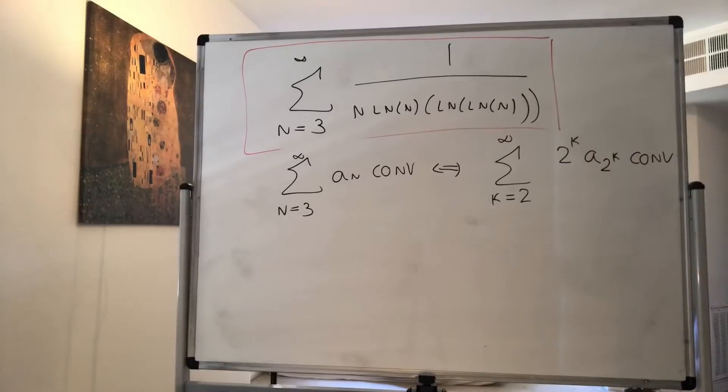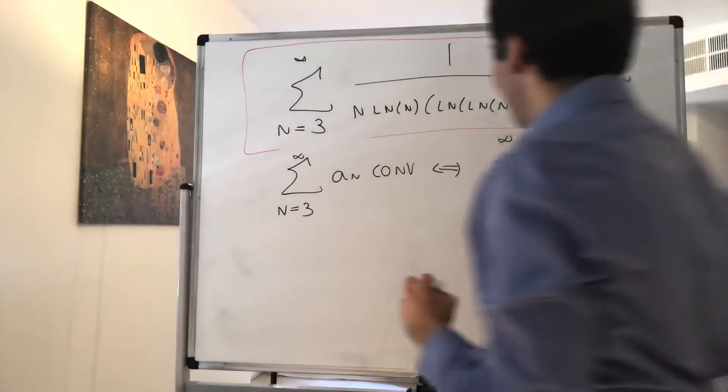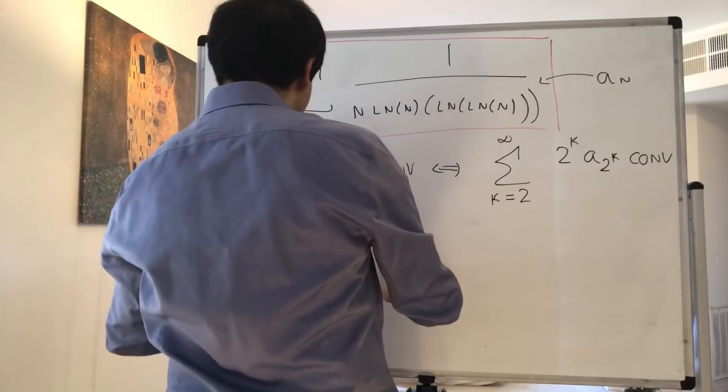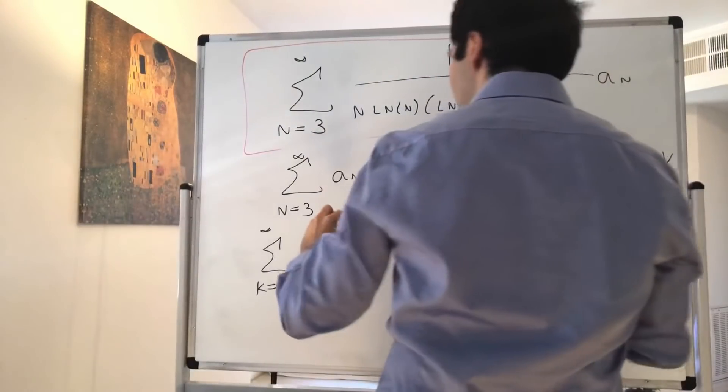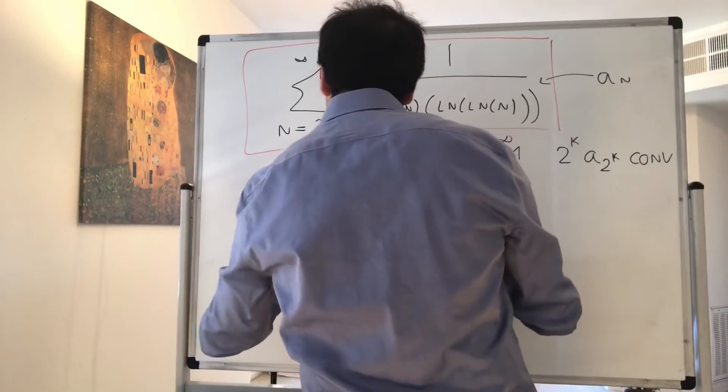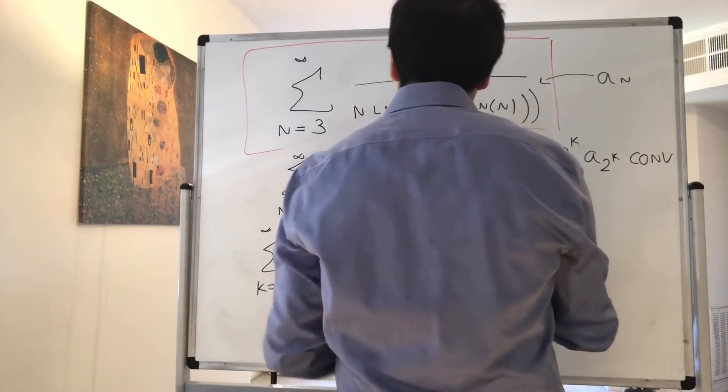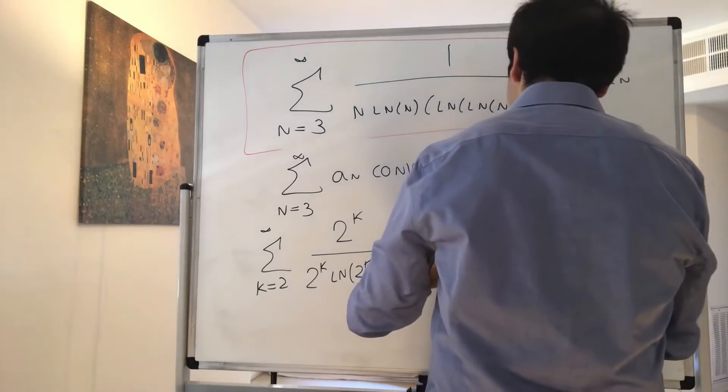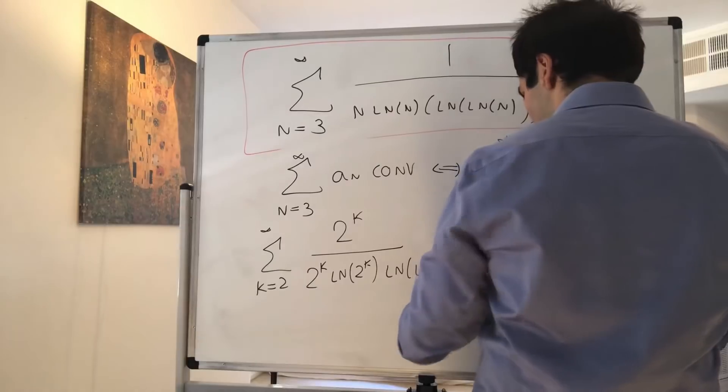And well, let's apply this to this series. So this is a_n. Then, what do we get? So the sum from k from 2 to infinity of 2^k times a_{2^k} becomes 2^k over 2^k ln of 2^k times ln of ln of 2^k.